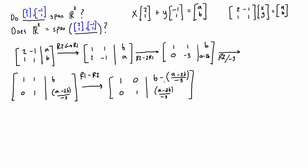We have the left-hand side in reduced row echelon form with values on the right side. This indicates we have one unique solution — and more importantly, at least one solution. If there were no solution that would mean they do not span R2, but because we have a unique solution, they do span R2. For any vector (a, b) in R2 there's a corresponding x and y we can multiply to these two vectors to sum them up to get that vector.